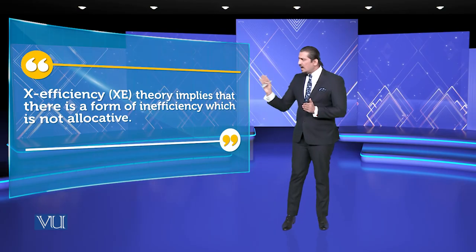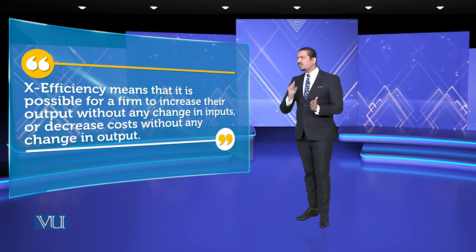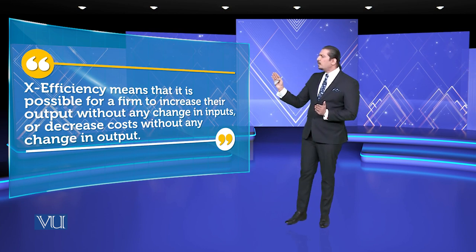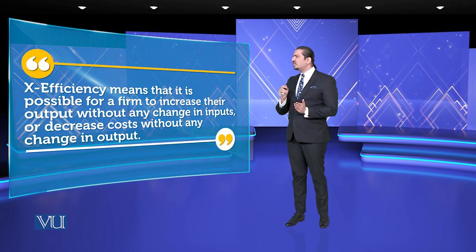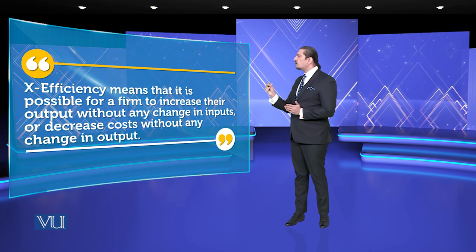مثال کے طور پر media میں اگر آپ نے daily یا once a week پروگرام کرنا ہو تو resource allocation ضروری ہے: co-partner کون ہوگا، justification اور evidence کے لیے کون سے resources چاہئیں، اور باقی crew کیسے develop ہوگی۔ ہر arrangement کے لیے allocative resource چاہیے۔ X-efficiency کہتی ہے کہ it is possible for a firm to increase their output without any change in input, or decrease costs without any change in output۔